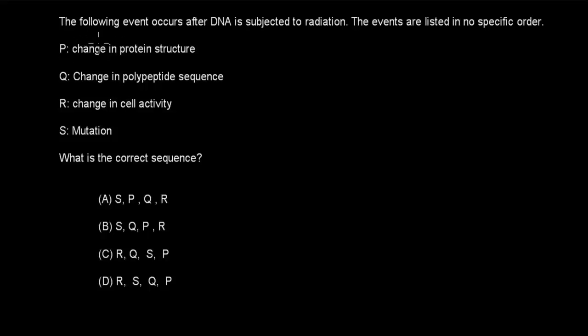Last question. The following events occur after DNA is subjected to radiation — listed in no specific order. P: change in protein structure. Q: change in polypeptide sequence. R: change in cell activity. S: mutation. What is the correct sequence? Pause the video and attempt the question.